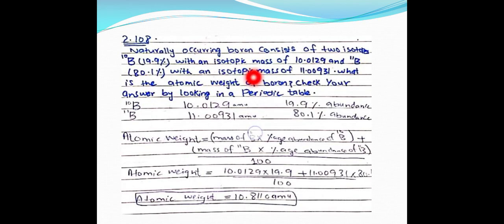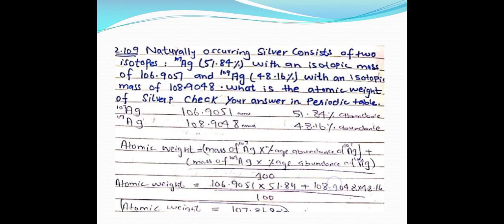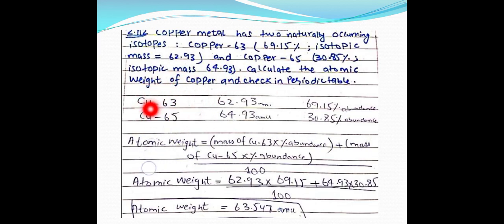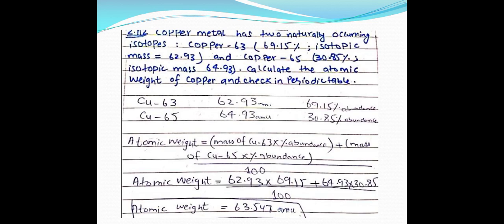Practice questions: for two isotopes of boron, with given masses and abundances, apply the atomic weight formula to find boron's atomic weight. For two isotopes of silver, applying the formula gives an atomic weight of 107.818 amu. For copper's two isotopes with given masses and percent abundances, the formula yields 63.547 amu. That concludes this lecture — questions and topic requests can be left in the comment box.